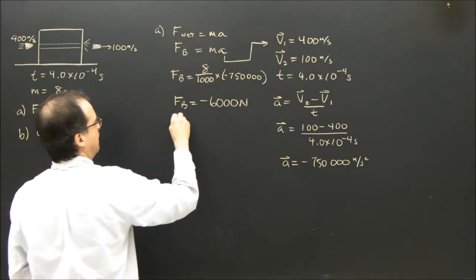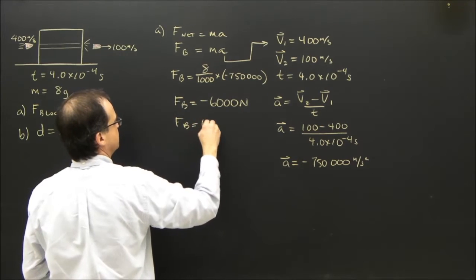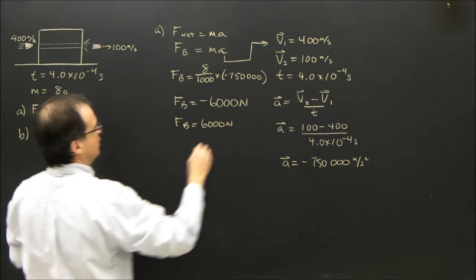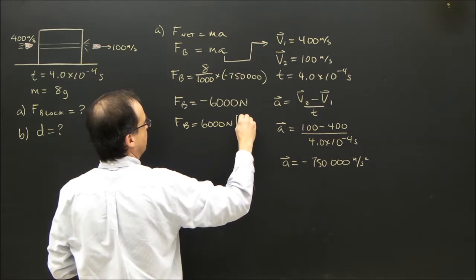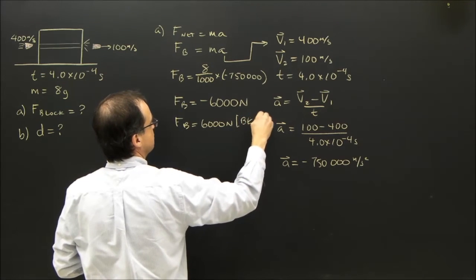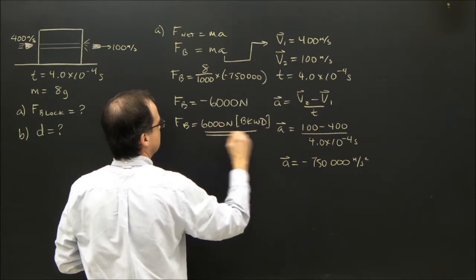So what's the force on the block? The force on the block is 6,000 newtons. And which way would it be? Backwards. So we'll say backwards. Here's our answer.